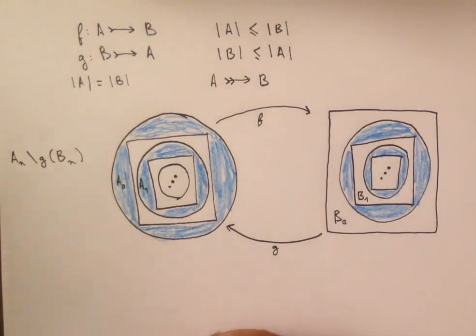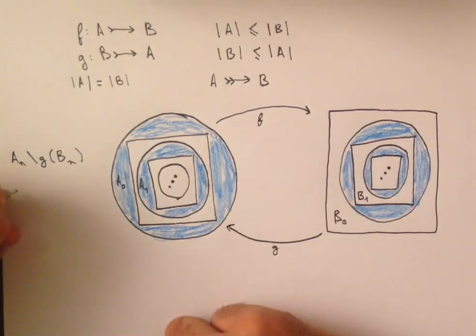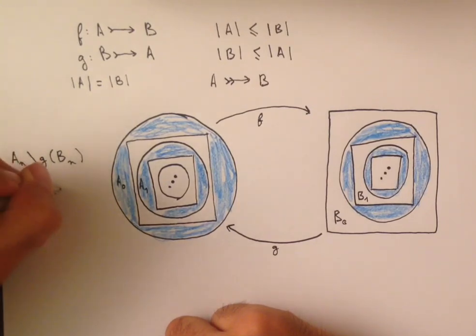And so now, the other thing that we have left is these square regions. And these square regions are of the form G of BN complement F of AN.